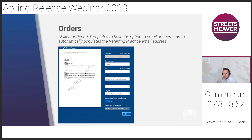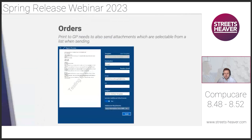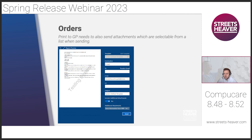We now have a couple of enhancements within orders. The first is the ability for report templates to have options to email and to automatically populate the referring practice email address. In the report preview, with destination set to email, we've added a practice email button — when pressed, it copies the GP email address registered within the episode of care through. We've also added an include additional attachment toggle, which gives a list of all available attachments that can be sent with the email.